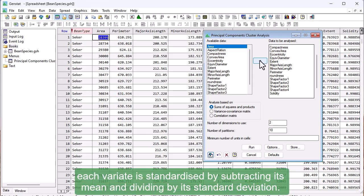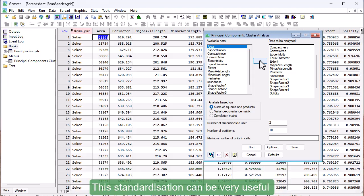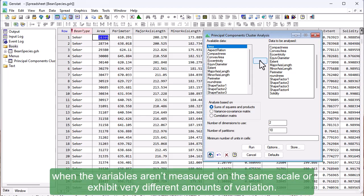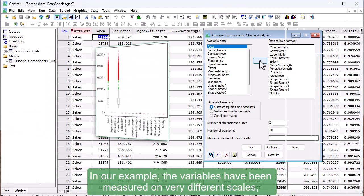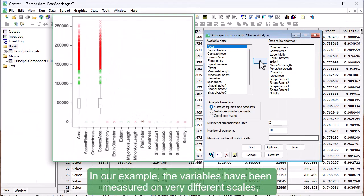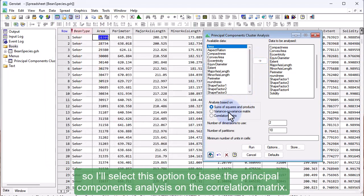This standardisation can be very useful when the variables aren't measured on the same scale or exhibit very different amounts of variation. In our example, the variables have been measured on very different scales, so I'll select this option to base the Principal Components analysis on the correlation matrix.